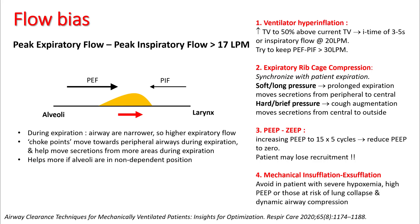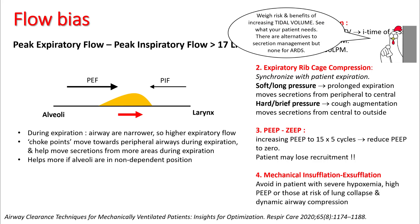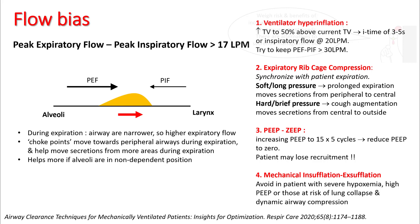There are four ways to achieve positive flow bias. First: increase tidal volumes about 50% above current tidal volume and increase inspiratory time to 3 to 5 seconds, slowing inspiratory flow to around 20 liters per minute. Then keep the difference between peak expiratory and peak inspiratory flow more than 30 liters per minute — this should help sputum mobilization. However, understand that low tidal volumes are important in ventilated patients, so weigh what your patient needs. There are many other alternatives to secretion management, but not much for ARDS.